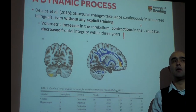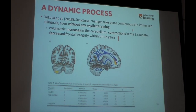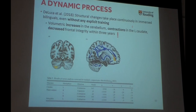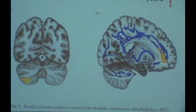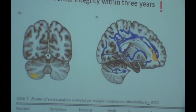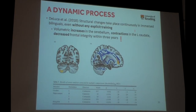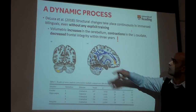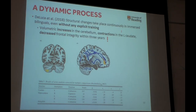What we did a few years ago is we brought back some people we had scanned for an older project and scanned them again after three years — all bilinguals, all living in the UK. This wasn't a longitudinal study based on a training protocol; they did nothing in these three years. They were just living in the UK, using English as a second language because they had to survive, work, and had friends and family. What we found after three years were still changes: volumetric increases in the cerebellum, contractions in the cortex and subcortical structures, and also decreases in white matter in different frontal white matter tracts.